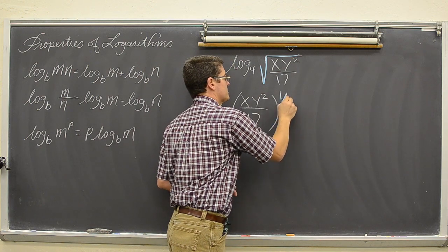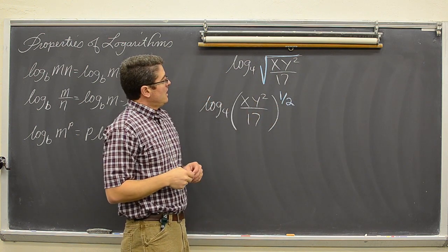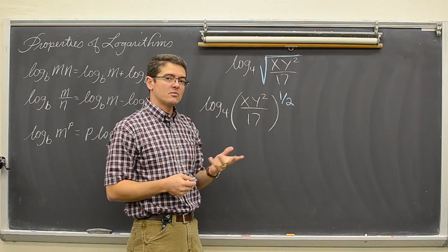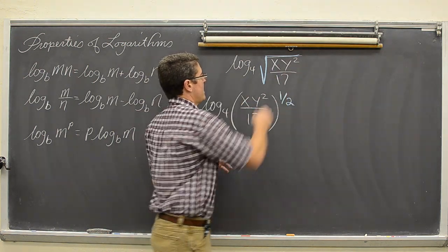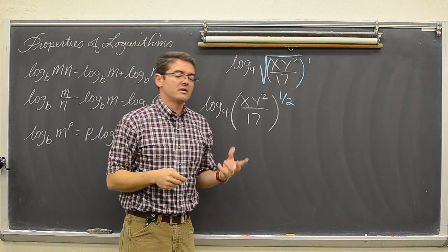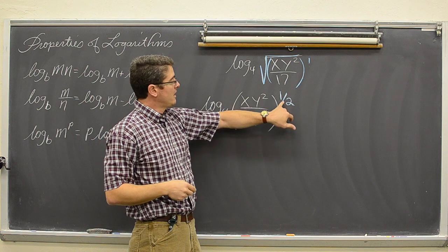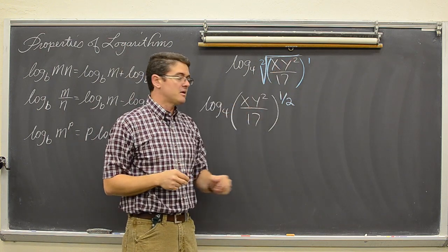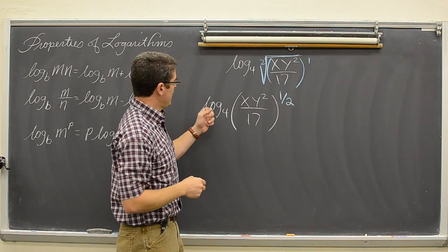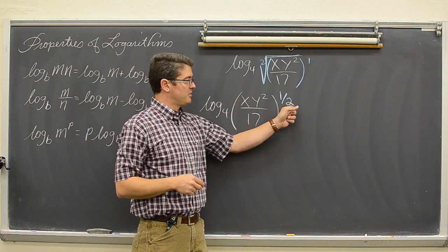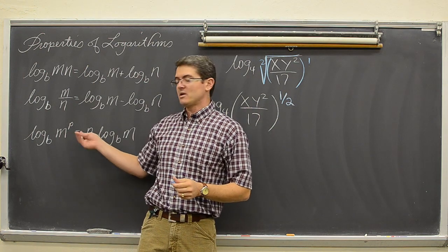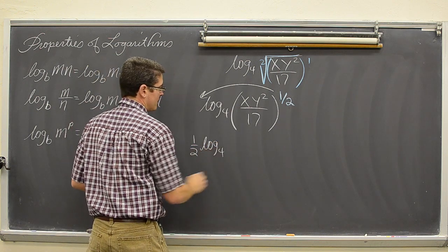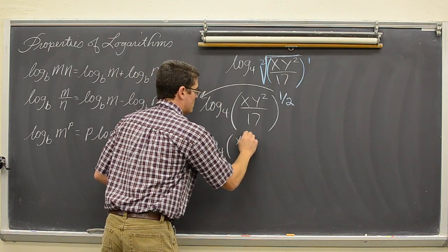That one half power represents the square root symbol that is over this fraction. When you have fractional exponents, the top number is the power. The entire expression has a power — the entire fraction under the radical has a power of one — and the root is the bottom number, which was the second root. So the square root of x y squared over 17 becomes x y squared over 17 to the one half power. We are expanding the log of this fraction which is completely engulfed by the power of one half, so we have to deal with that power property first and move the one half out front. That gives us one half log base four of x y squared over 17.